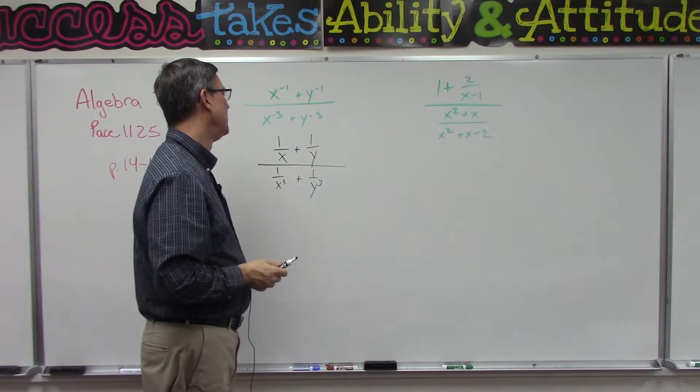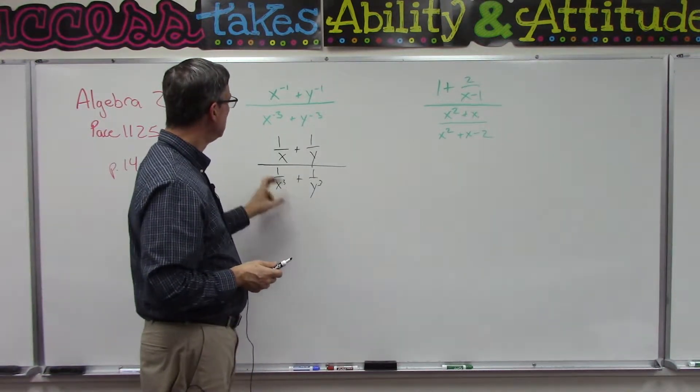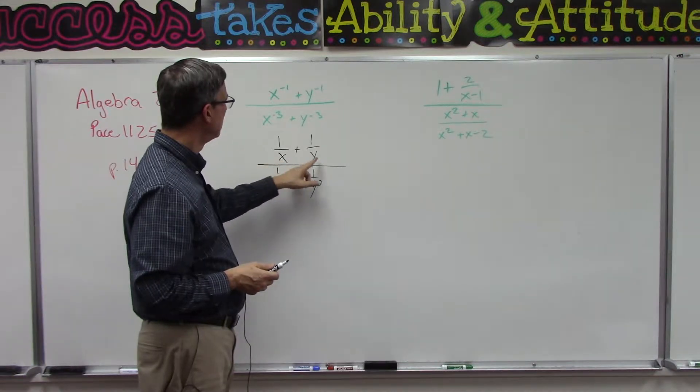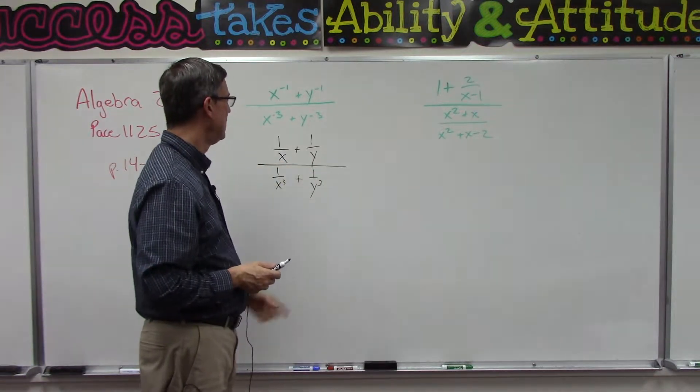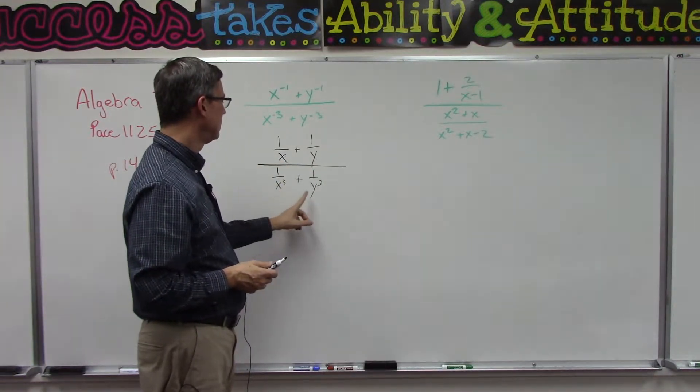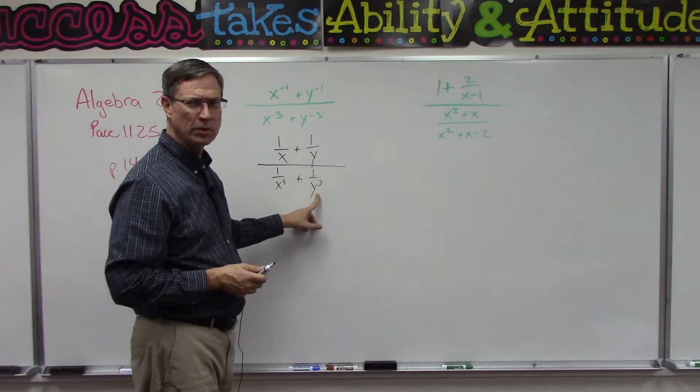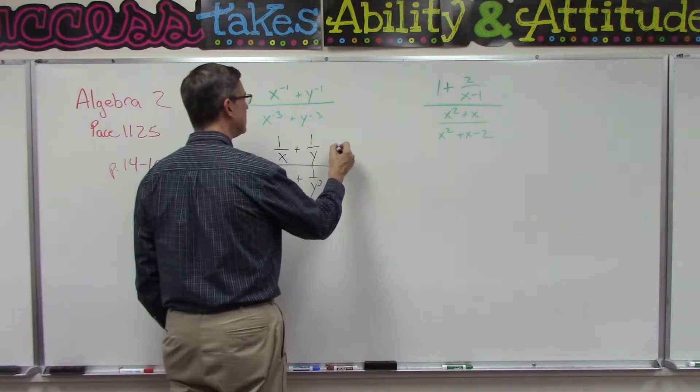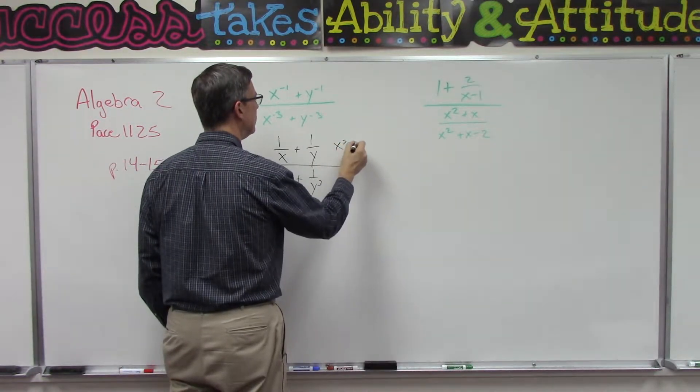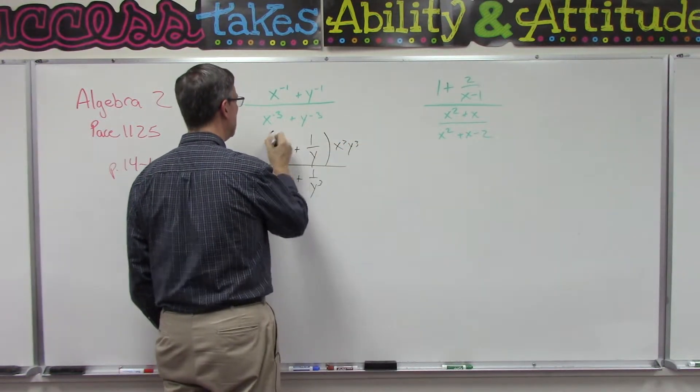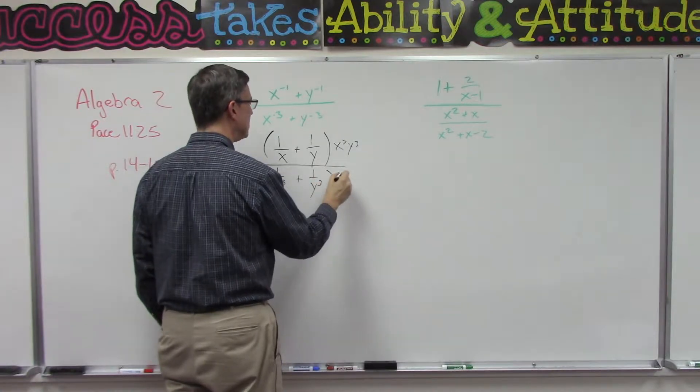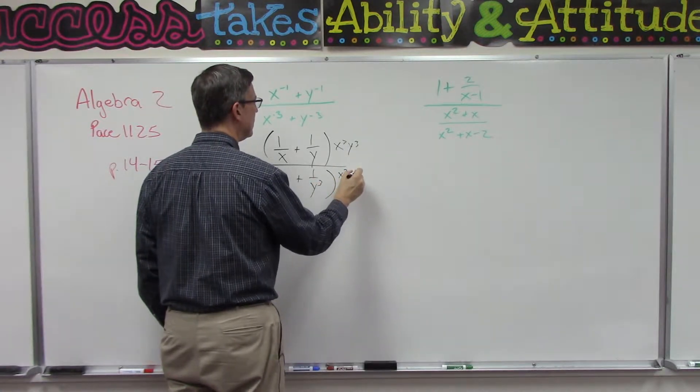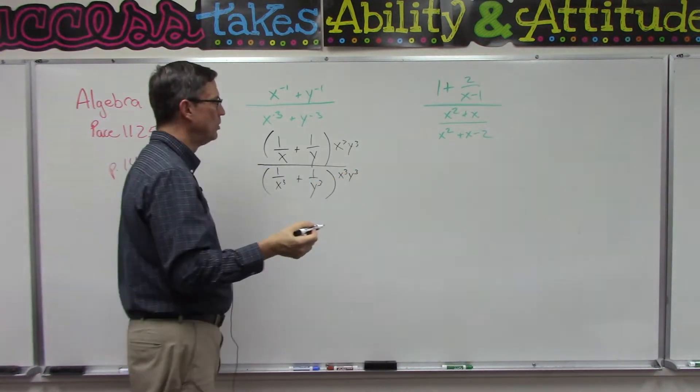Now we're going to find out what is the least common denominator. Up here it would be XY, but down here it's X to the third Y to the third. So actually of all four of these denominators, X to the third Y to the third is the least common denominator. So we're going to multiply through top and bottom by that least common denominator.